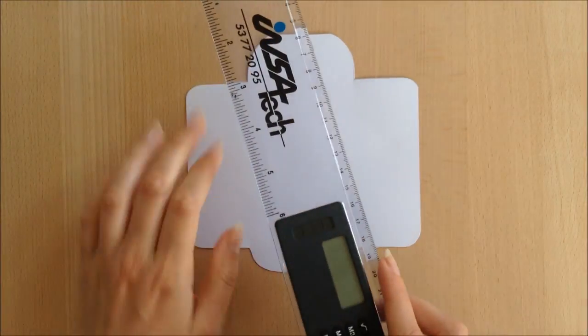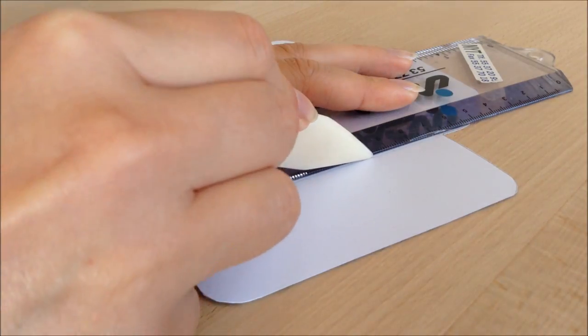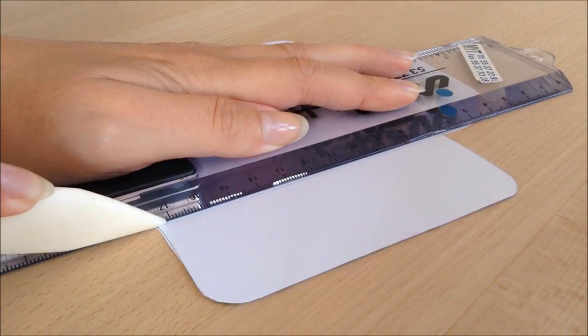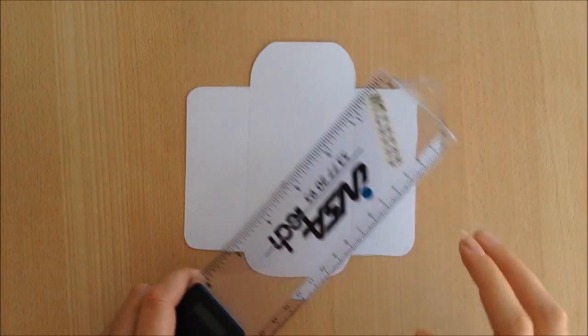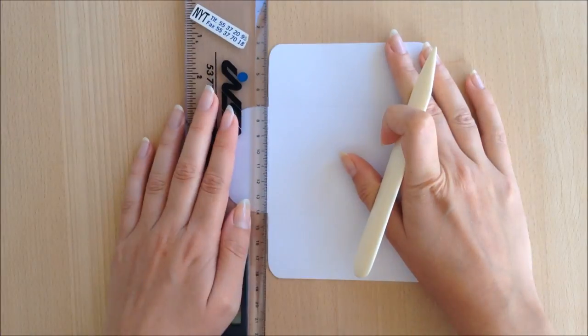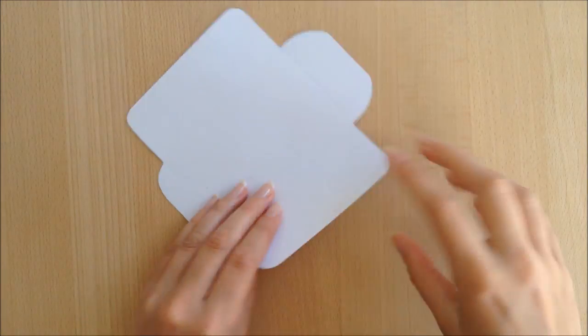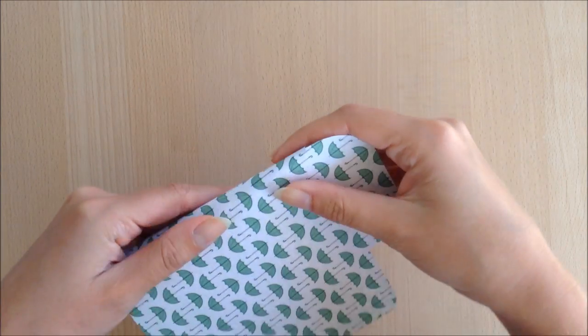Now I'm gonna grab a ruler, or basically anything straight, and take my score bone and score all the places that I want to bend. It's not necessary to use a score bone, but when you're working with thick paper, it really helps. So I recommend it. So after you've used that, you can basically go ahead and fold all of the lines.